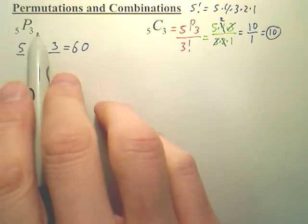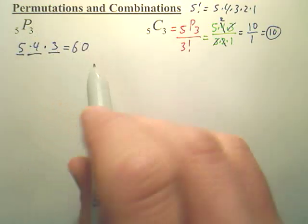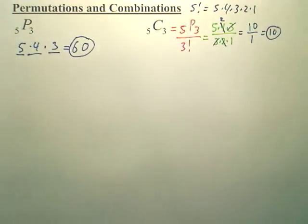This one, you just think of 5P3 as start with 5, go 3 terms down, multiply it all out, and that's your number. It's real simple.